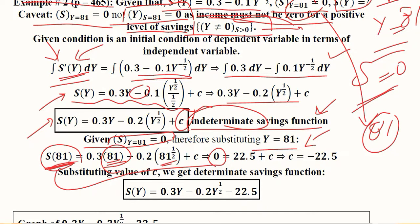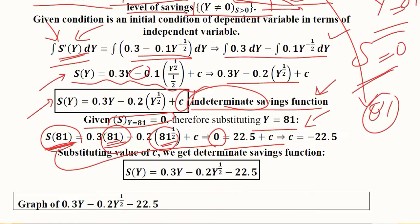Savings at income 81 is zero, so we can solve it. When we solve it, the final value of the constant of integration would be minus 22.5. Substituting this value, we get S(Y) = 0.3Y - 0.2Y^(1/2) - 22.5. This doesn't have any arbitrary constant anymore and is now the determinate or definite version of the savings function, the total savings function.